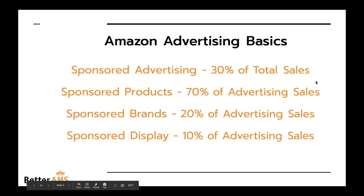In a really healthy account, these are the metrics we typically see. Out of your total sales, 30% are typically driven from sponsored ads — that's what we like to see when running an analysis. If I hop into an account and see 90% of sales from ads, it tells me their organic rank is not in a great spot. If 5% of your total sales are from ads, you probably have a lot of room to grow on the advertising side, which will influence your organic ranking and market share.